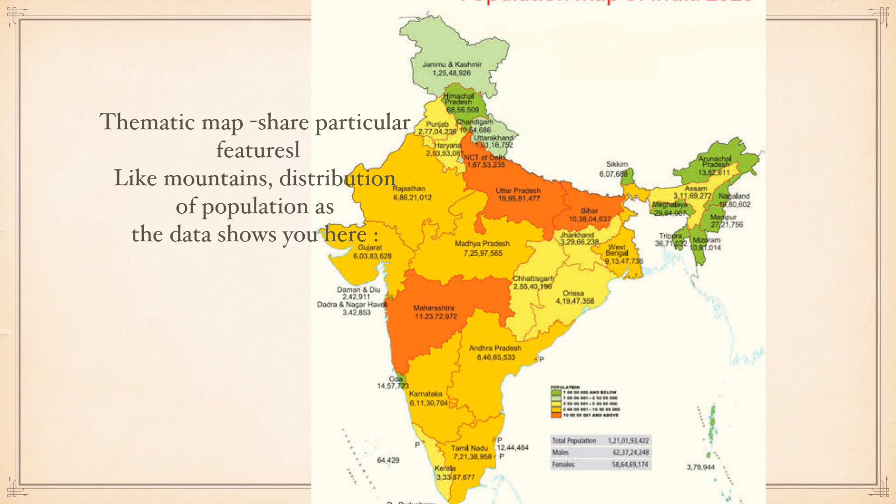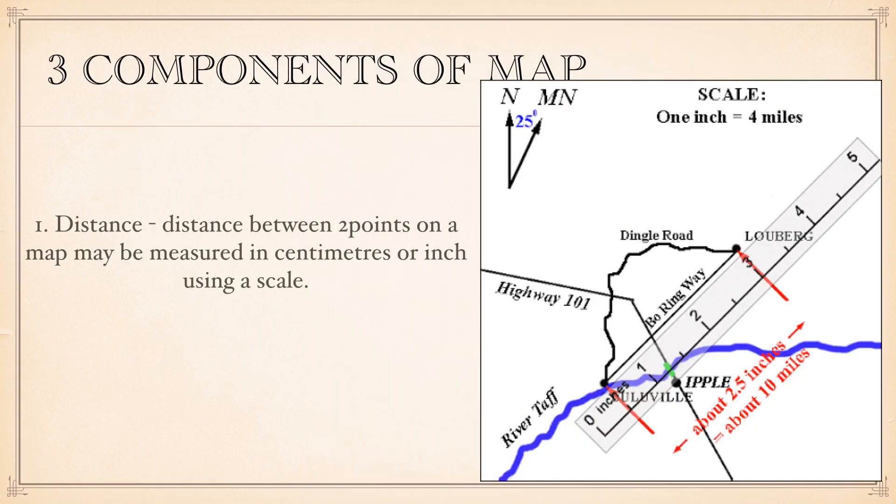Do you see the picture? The distance between two points is 2.5 inches, and one inch is 4 miles. So 2.5 into 4 is 10 miles. The total distance between two points is 10 miles. This is how we measure the distance.